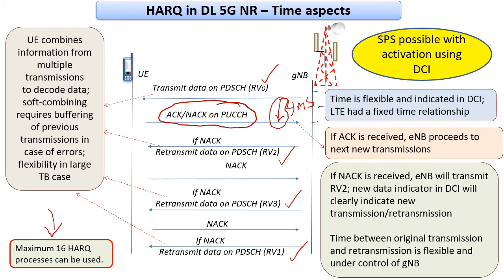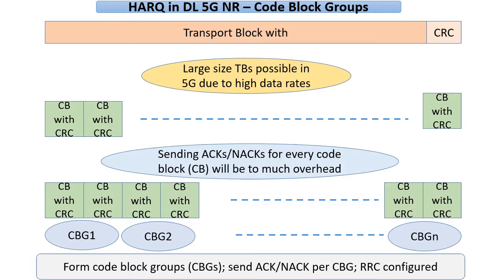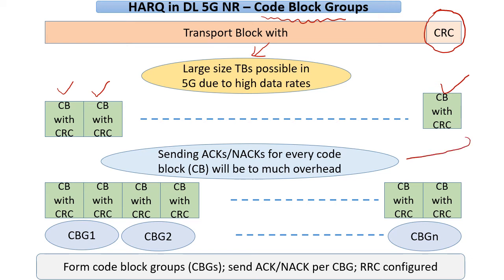Another difference also exists in HARQ, and that is going to be our focus in the next few slides. This has to do with an idea called code block groups, short form CBG. If you look at how the transport block comes down, a transport block usually has a CRC attached for error detection at the receiver, and because of certain coder limitations, we divide the transport blocks into what are called code blocks — this has been around in LTE as well. Each of those code blocks also has a CRC. Now, we could have very large transport block sizes, since one of the aspirations of 5G is very high data rates. Large transport blocks are a reality and you will have to split them into a number of code blocks. One option if you do not want to retransmit the entire transport block is to send an ACK/NACK for every code block.